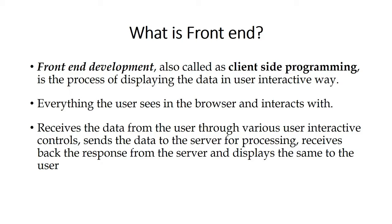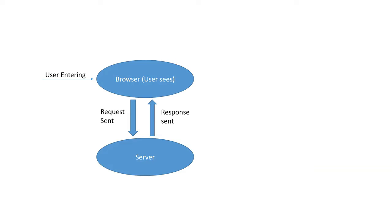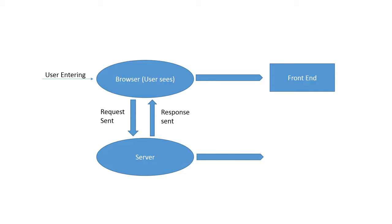This is the actual flow. For better understanding, let's see it in a diagrammatic way. The user opens a browser and enters whatever data they need. The request is captured from the browser and sent to the server. The response is sent back from the server, captured by the browser or front end, and displayed to the user. Whatever the browser handles is front-end; whatever the server logic handles is back-end. This is the main difference between front-end and back-end.